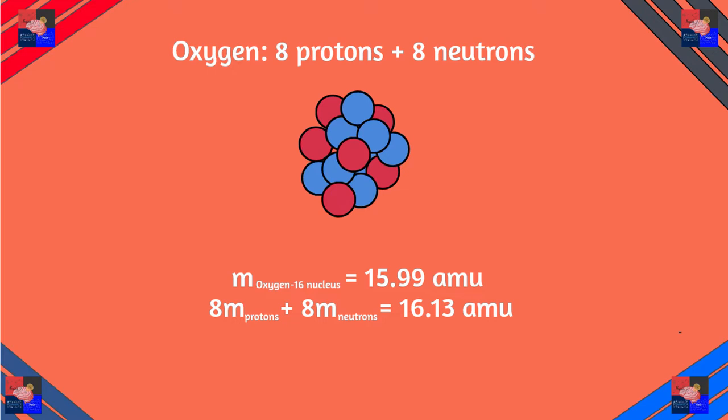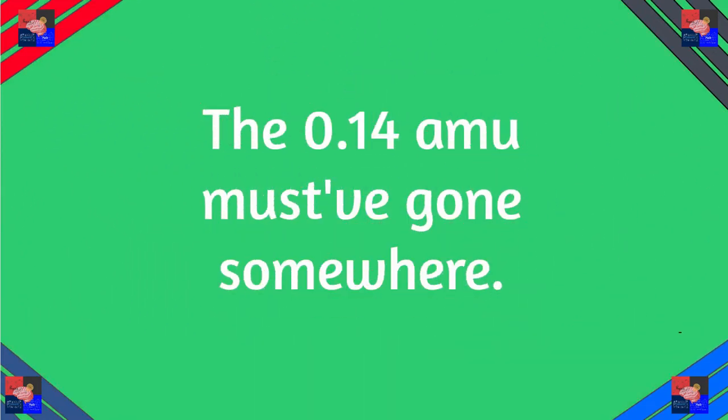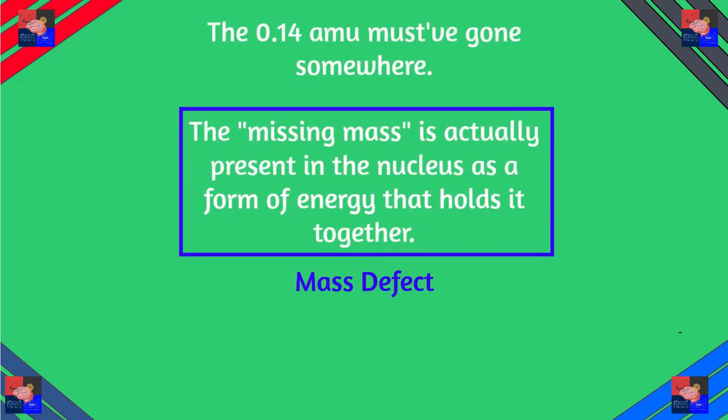Why is that? Where did the 0.14 amu go? That missing mass is actually present in the nucleus as a form of energy that is holding the nucleus together. This is called a mass defect.